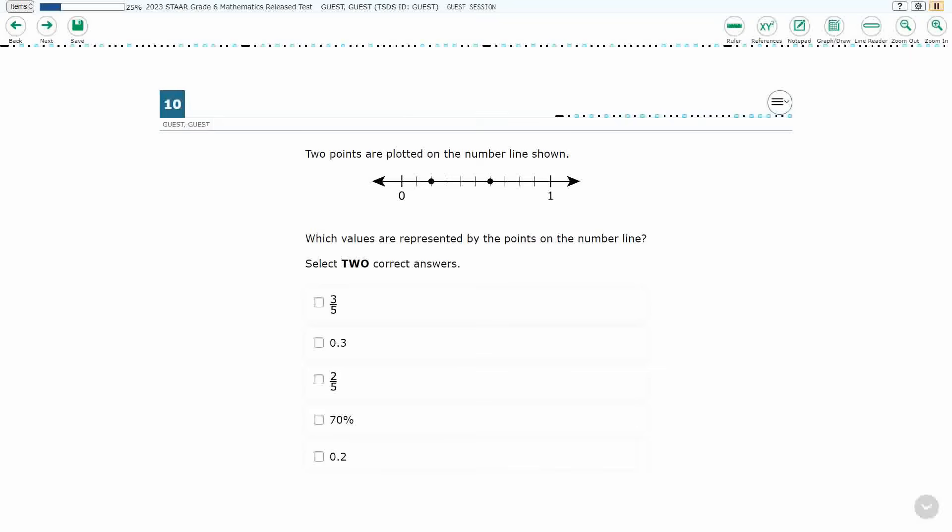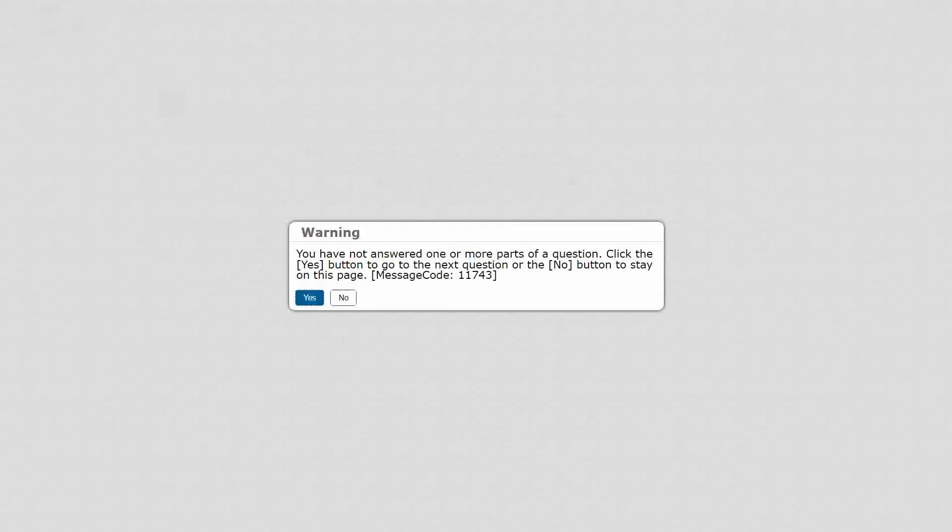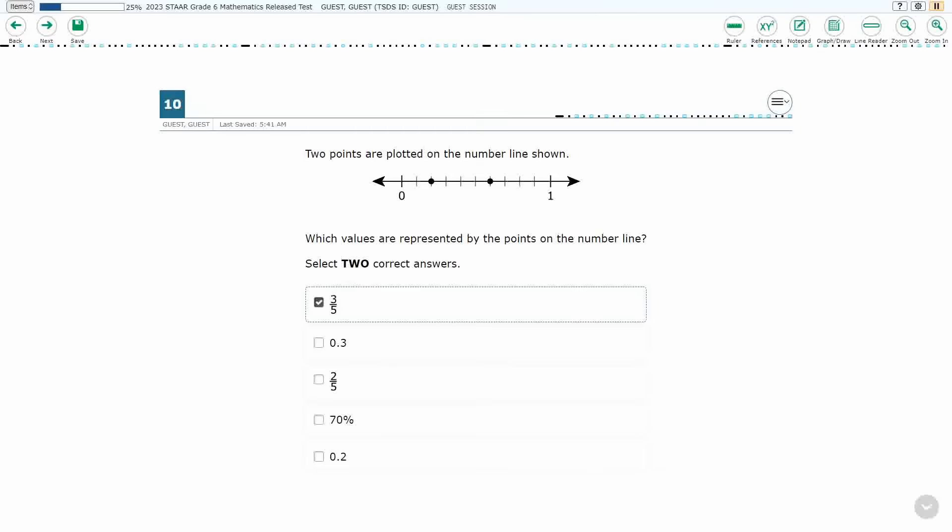All right, so we need to select two correct answers. If I just select one, it is going to come up with a warning saying I have not answered everything. And if I try to select three, even though I'm trying, it is impossible to select three. So they really want you to just select two answers.